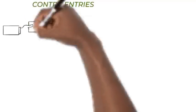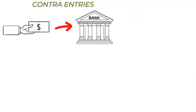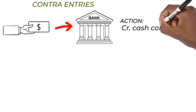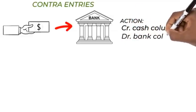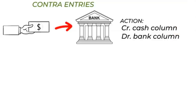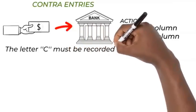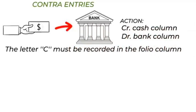Contra entries are made in the cash book when cash is deposited in the bank account out of the cash in hand, or when cash is withdrawn from the bank for office use. When there is a surplus of cash in hand, the firm can pay it into the bank. Money will leave the cash and will be deposited in the bank. Action: credit the cash column and debit the bank column. The double entry will be completed in the cash book, and the letter C must be recorded in the folio column to show the transfers. This is illustrated below.